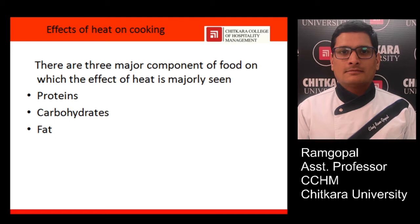Last time we discussed the effect of heat on proteins. Whenever you cook a protein product, take the example of an egg: in the initial stage the egg is in liquid form, but slowly as you apply heat it starts coagulating and turns into a thick mass. However, if you give intense heat to a protein product, the protein will get denatured and become an irritating substance for the stomach. That was the recap of the last chapter.